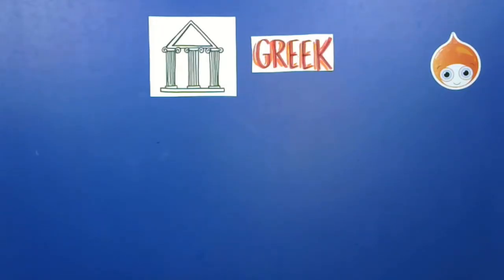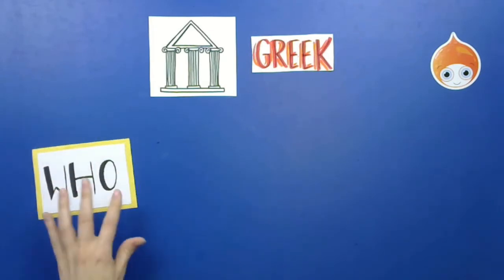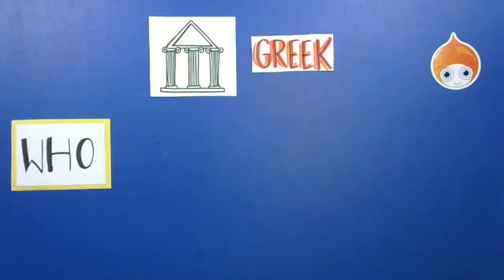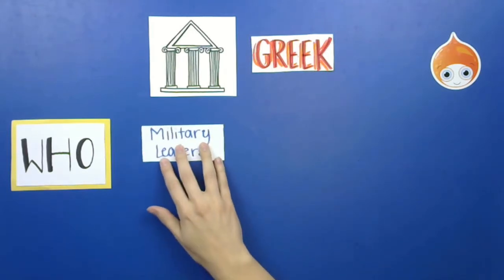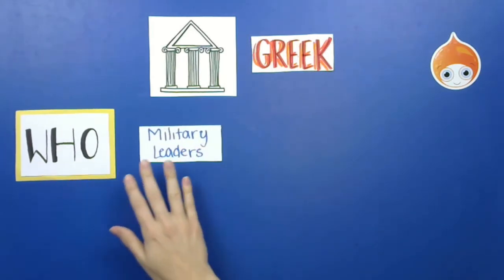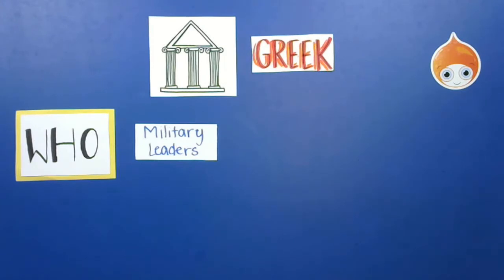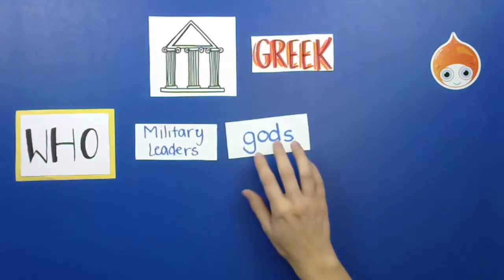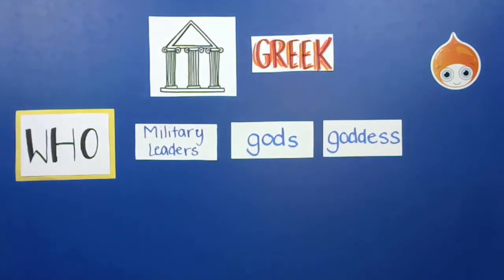We are going to begin our review for Greek art history. We had a lot of things to talk about, so let's begin with our who. Who were the Greek people we wanted to talk about? The first set of people were the military leaders. In Greece, there were a lot of wars, so military leaders are very important. Also, their gods and their goddesses. Those are the three really important types of people in Greek history: military leaders, the gods, and the goddesses.